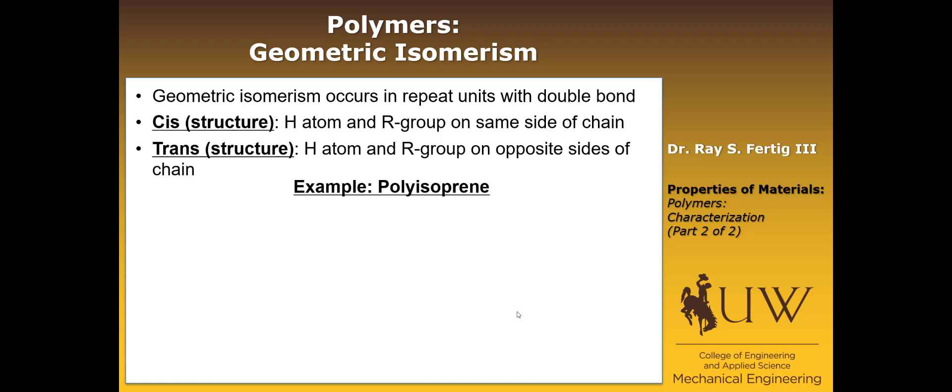So we can look at, for example, polyisoprene in the cis structure. So let me just go back here. This is a repeat unit. There's a carbon double bond. We go to a CH2 there. You can imagine I could bond it to exactly the same other repeat unit and create a chain. In this case, we have the R group is the CH3. And then we have a hydrogen. They're on the same side of the chain. So it's called a cis structure.